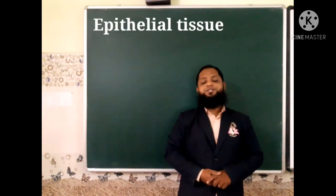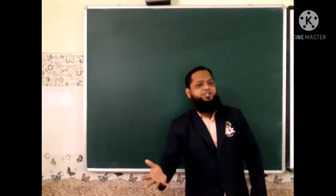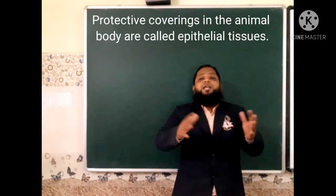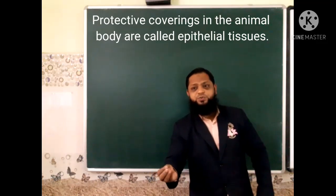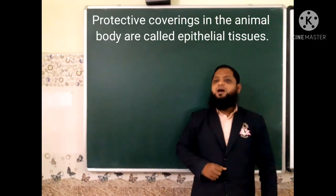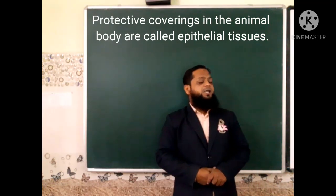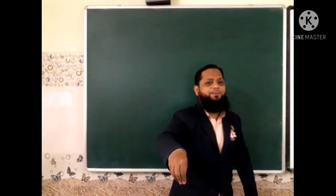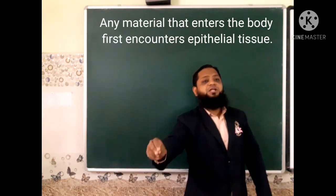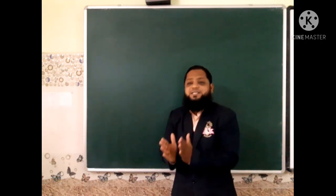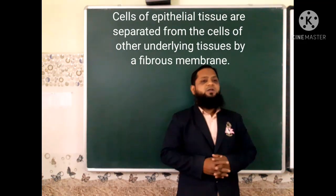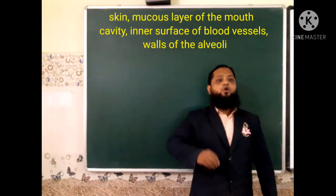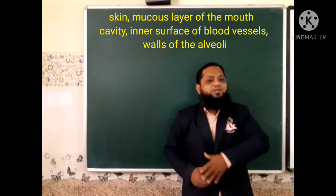The first type is epithelial tissue. Epithelial tissues are considered to be protective tissues because they are responsible for the protection of the inner contents of the body. They are closely packed and form continuous layers. As material enters the body, it first encounters the epithelial tissues. Epithelial tissues are separated from other cells or tissues by a fibrous membrane, and are found in the inner surface of blood vessels, walls of alveoli, mucous layer of the mouth cavity, and skin.